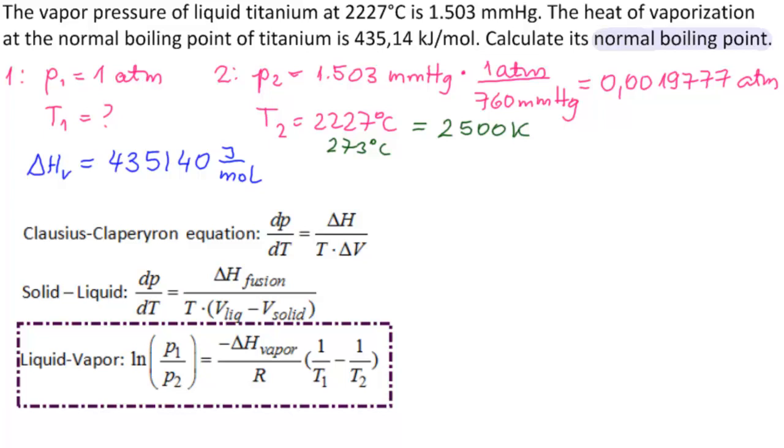So we have ln of 1 atmosphere over 0.0019777 atmospheres—they cancel—and then that equals minus 435,140 joules per mole divided by the gas constant R, which is 8.3145 joules per mole Kelvin.